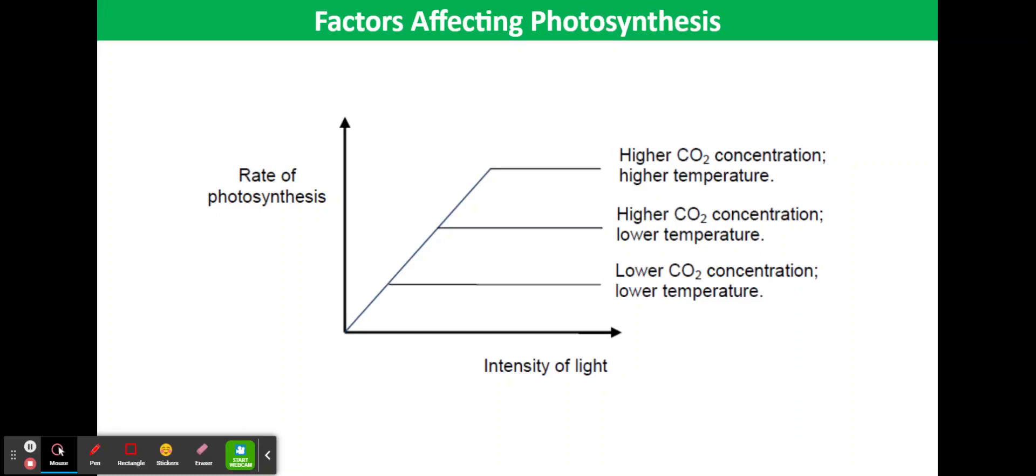This video tutorial is about the factors affecting photosynthesis. The factors that affect the rate of the complex process of photosynthesis operate simultaneously. These factors include the raw materials, carbon dioxide and water,